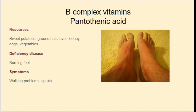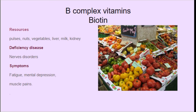Pantothenic acid resources include sweet potatoes, groundnuts, liver, kidney, eggs, and vegetables. The deficiency of this vitamin causes burning feet — symptoms include burning sensation in the legs, walking problems, and strain. Biotin resources are pulses, nuts, vegetables, liver, milk, and kidney. Deficiency of biotin leads to nervous disorder. The symptoms are fatigue, mental depression, and muscle pains. Up to here, these are the B complex vitamins.